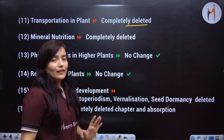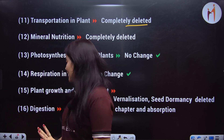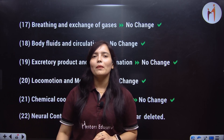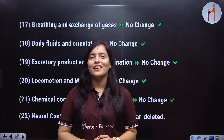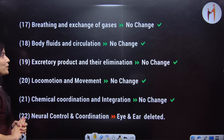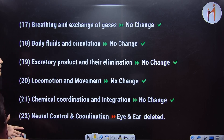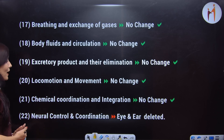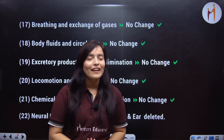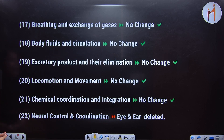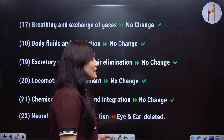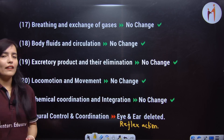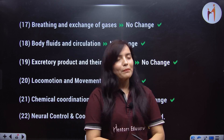Digestion and absorption chapter is completely deleted. Breathing and exchange of gases — no change. Human physiology has very few changes. Breathing — no change. Body fluid and circulation — no change. Excretory products and elimination — no change. Locomotion and movement — no change. Chemical coordination and integration — no change. Neural control and coordination: the eye and ear is deleted, and reflex action is also deleted. The new NCERT has no reflex action.